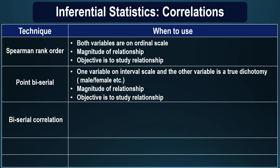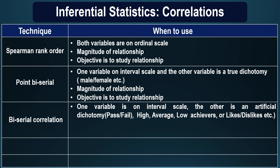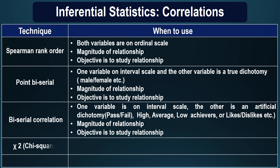Biserial correlation, on the other hand, is used when one variable is on interval scale and the other variable is an artificial dichotomy created by the researcher. Maybe you have a category which is pass or fail, or you categorize the sample into high, average, and low on the scale, or you have likes and dislikes for a particular phenomenon.